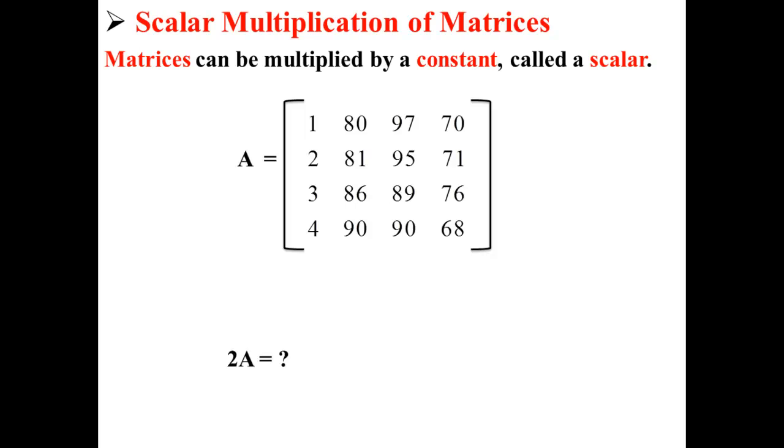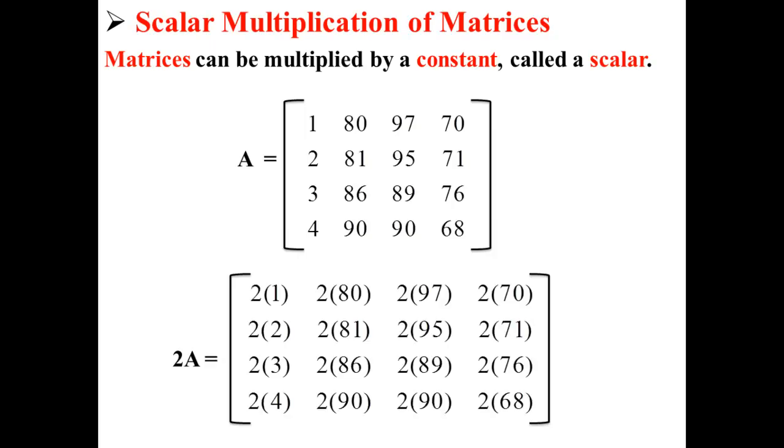For example, let's say the matrix we have here is matrix A. We want to know what 2A would be. Well, to find 2A, we would simply multiply every element in our matrix by 2.